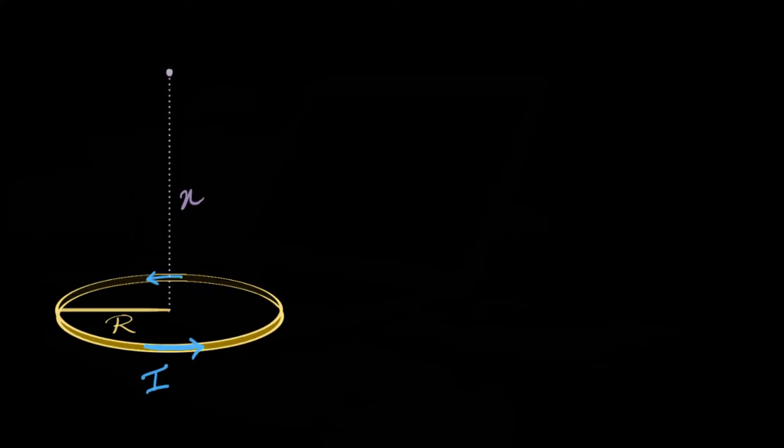Say we have a circular wire of radius r carrying a current i. Our goal in this video is to figure out the strength of the magnetic field somewhere on the axis at a distance x from the center.